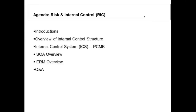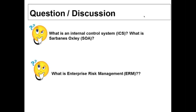I'm going to take you through the internal control structure at Siemens — our Sarbanes-Oxley. Everyone knows what Sarbanes-Oxley is from your accounting classes? It was signed by President Bush in 2002 to create accountability because of Enron, WorldCom, and other things.